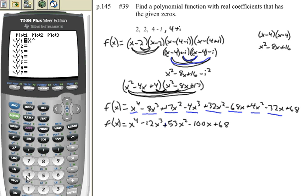Minus 12x to the 3rd power, plus 53x squared, minus 100x, plus 68.